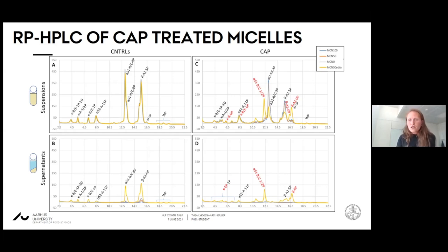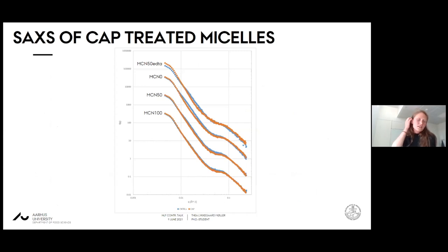We looked at the SAXS of these cap-treated micelles. Again, the main difference in scattering that we observe is in the intermediate region and in the high-Q shoulder. The EDTA-treated sample behaves differently, which is probably due to the EDTA treatment itself. Even with phosphatase treatment, we're actually able to detect changes.